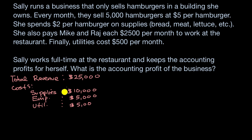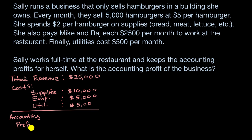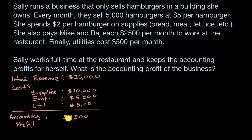From this, we can calculate the accounting profit. Accounting profit is going to be $25,000 minus $15,500, which equals $9,500 per month — and she gets to keep all of this. This seems like a pretty good amount of money; she's earning six figures a year. But the question is, is it rational for her to do this?